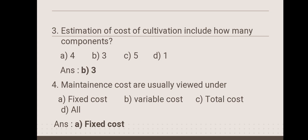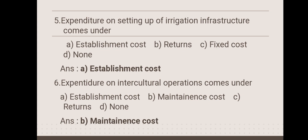Next: estimation of cost of cultivation includes how many components? Option A: 4, option B: 3, option C: 5, option D: 1. The answer is 3 — there are three main components for estimation of cost of cultivation. Next question: maintenance costs are usually viewed under which cost? The answer is fixed cost.